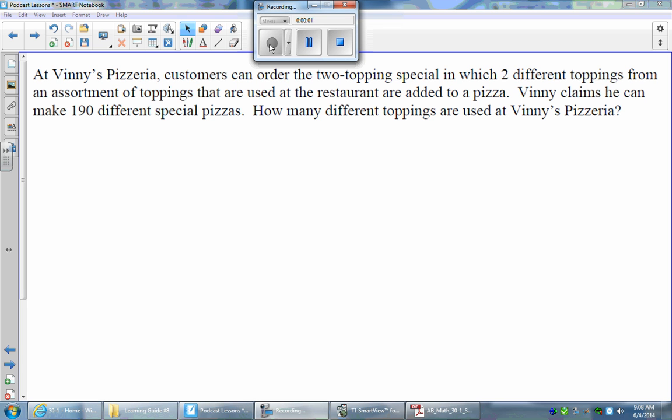All right, so here's a question involving a combination where you may have to find out what N is or what R is. So here's my question here. At Vinny's Pizzeria, customers can order the two-topping special in which two different toppings from an assortment of toppings that are used at the restaurant are added to a pizza. Vinny claims he can make 190 different special pizzas. How many different toppings are used at Vinny's Pizzeria?